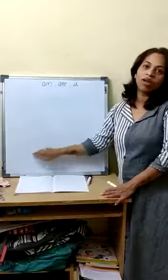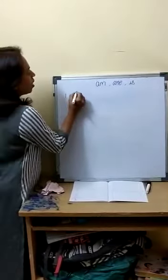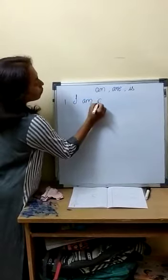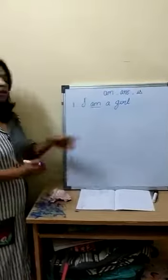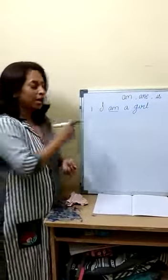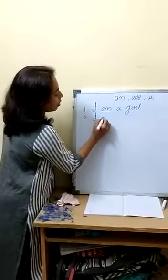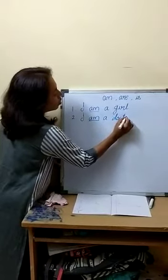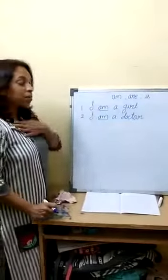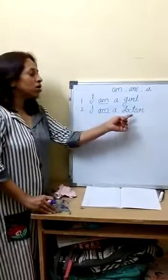Today also we will see some more examples where we use am, where we use are and where we use is. The first example for am is: I am a girl. I am a doctor. I am telling about my profession — I am a doctor.